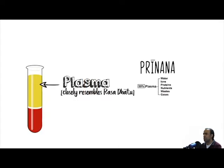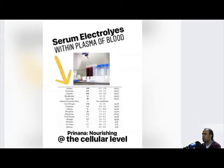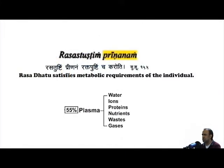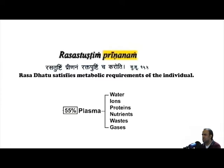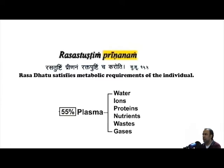For example, the upper clear solution of fractionated blood is plasma, which contains water, dissolved proteins, glucose, amino acids, vitamins, minerals, and electrolytes, all of which is nourishing to cells — hence the function of Rasa and Raktadatu being Pretanam, or that which is nourishing.